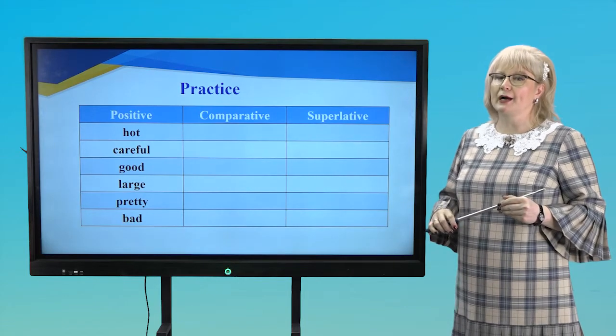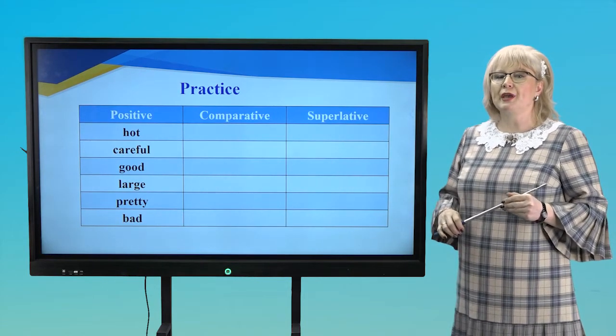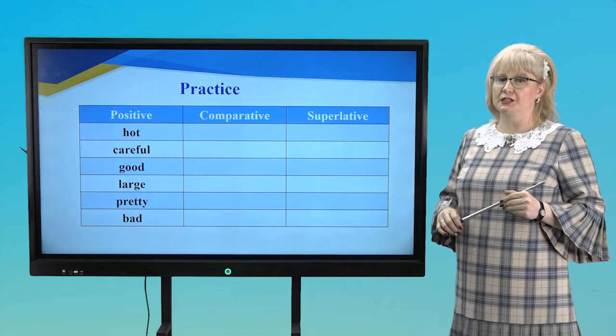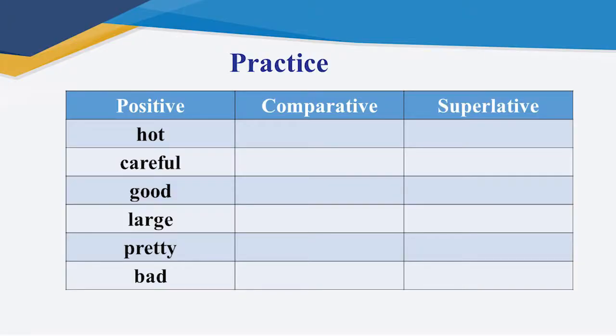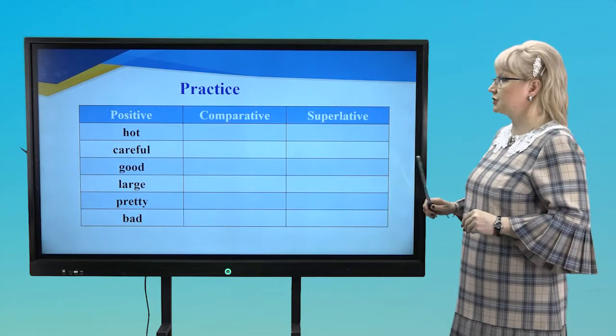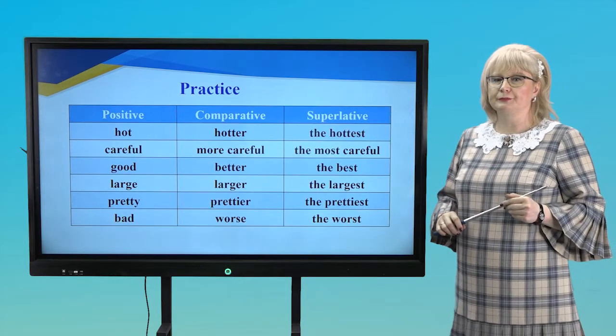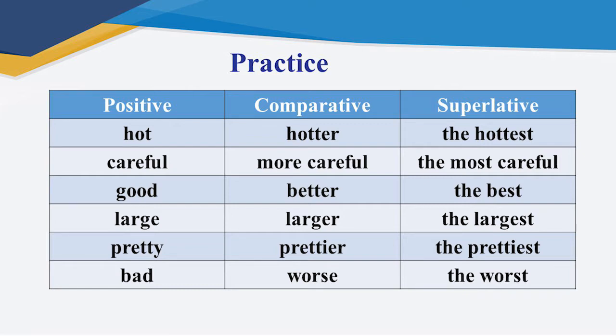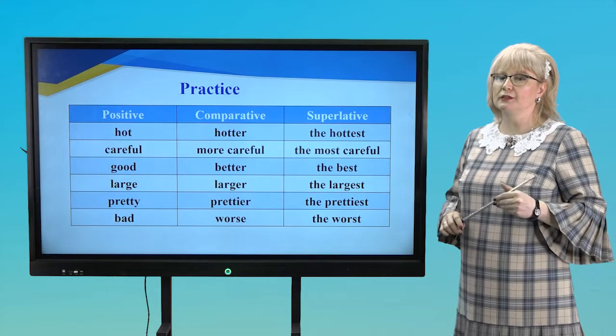And now, let's practice a little. Try to make comparative and superlative form of these adjectives, please. Hot, careful, good, large, pretty and bad. Ready? Ok, let's check. Yes, hot, hotter, the hottest. Careful, more careful, the most careful. Good, better, the best. Large, larger, the largest. Pretty, prettier, the prettiest. Bad, worse, the worst. Well done!